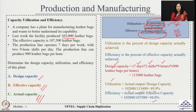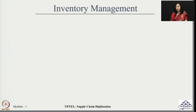Today we learned how capacity utilization and efficiency can be calculated using design capacity, effective capacity, and actual capacity — how they differ from each other — and using that, how KPIs can be calculated to ensure that your production and manufacturing is monitored properly. Going forward, we will pick up the next process which is a very important part of supply chain: inventory management.